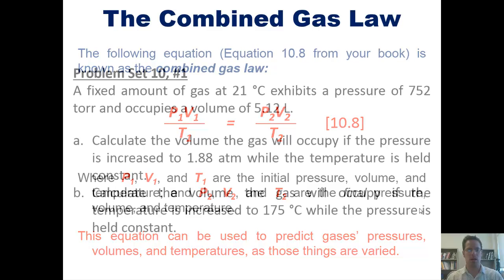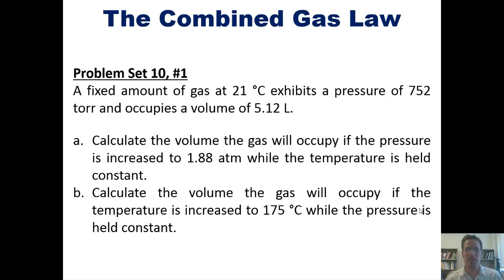Let's go ahead and use that by looking at a problem. A fixed amount of gas at 21 degrees Celsius exhibits a pressure of 752 torr and occupies a volume of 5.12 liters. Calculate the volume the gas will occupy if the pressure is changed to 1.88 atm, while the temperature is held constant, and then calculate the volume the gas will occupy if the temperature is increased to 175°C, while the pressure is held constant.